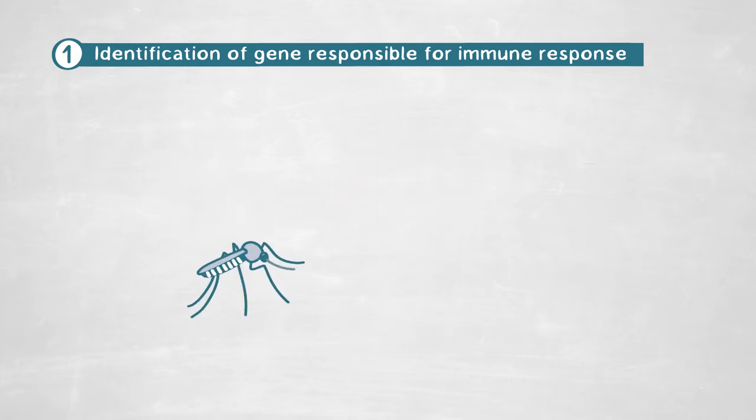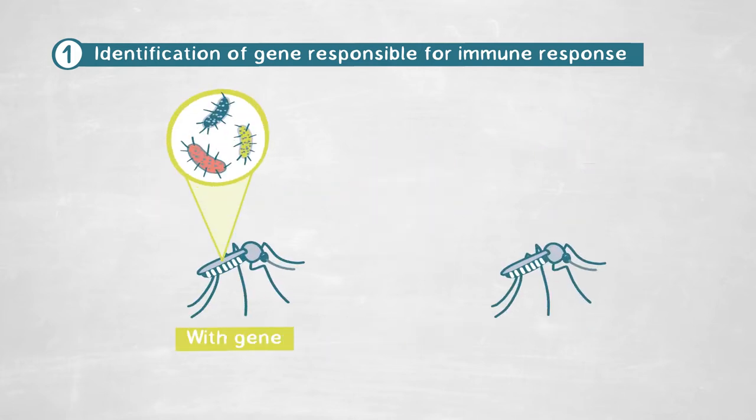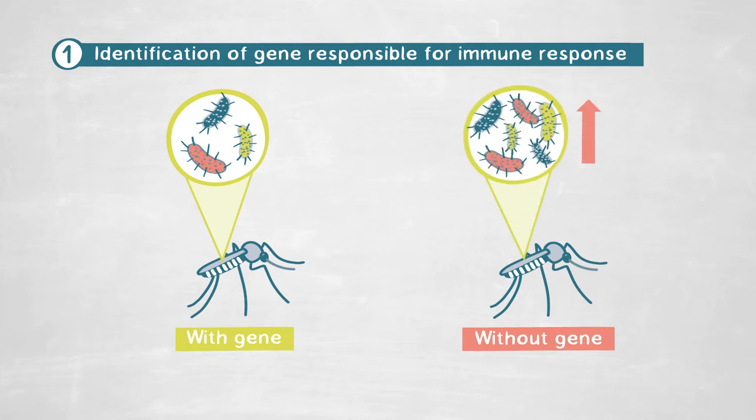If we eliminate this gene in the mosquito, what we see in the laboratory is that mosquitoes start to have huge numbers of parasites. That was very interesting — just by eliminating one gene, we could convert mosquitoes from susceptible to highly susceptible. The next question we asked was whether this gene has different forms in natural populations.